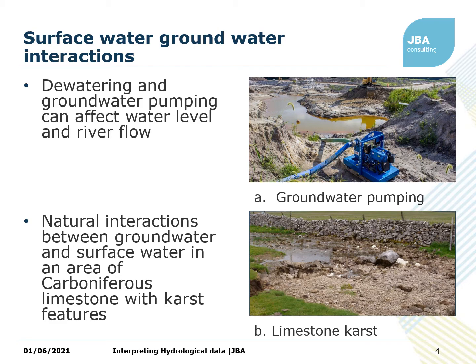You've also got the situation where there are natural interactions between groundwater and surface water. This picture shows an area of carboniferous limestone with karst features. The surface water is just disappearing into the karst and reappears later on as springs. So if you're trying to understand the surface water in a watercourse like this, you really need to understand the groundwater and how it's influencing things.